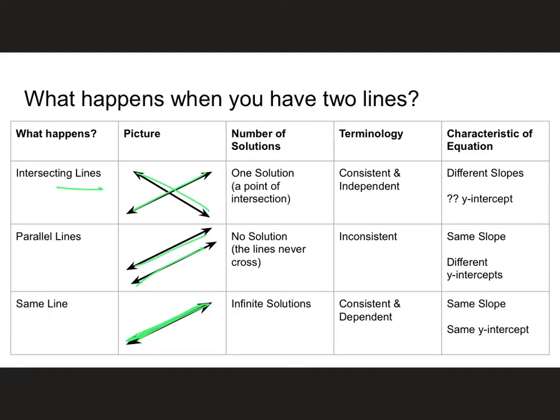For intersecting lines, there is only one solution to this system, and it is that point right there where the two lines cross. That's a point of intersection and there's only one solution. We call a system of equations of intersecting lines consistent and independent. They intersect because the slopes are different. The y-intercept could be the same or different, it really depends on where the lines intersect.